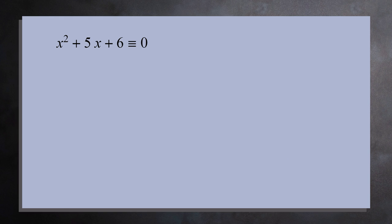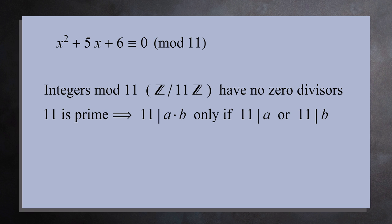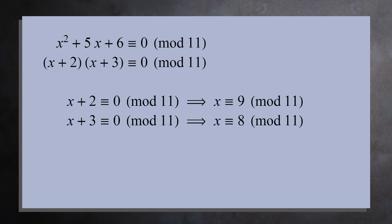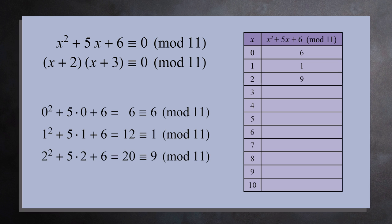Let's return to the equation x squared plus 5x plus 6 equals 0, except this time we'll work mod 11 instead of mod 12. The integers mod 11 do not have any zero divisors because 11 is a prime number. The only way the product of two numbers is a multiple of 11 is if one of the numbers is divisible by 11, and none of the integers 1 through 10 is a multiple of 11. Like before, we factor to get x plus 2 times x plus 3 congruent to 0 mod 11, giving us x equals 9 and x equals 8. Plugging in all integers mod 11 confirms the only solutions are 8 and 9 — exactly the two we found by factoring.